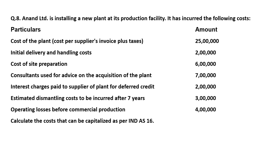The particulars and amounts are given: cost of plant per supplier invoice plus taxes is 25 lakhs; initial delivery and handling costs 2 lakhs; cost of site preparation 6 lakhs; consultation fees for advice on acquisition of the plant 7 lakhs; interest charges paid to supplier for deferred credit 2 lakhs; estimated dismantling cost to be incurred after 7 years 3 lakhs; and operating losses before commercial production 4 lakhs.